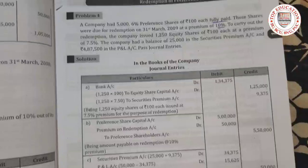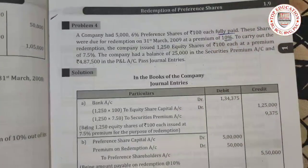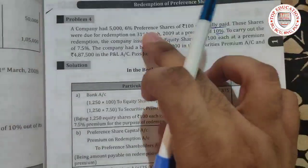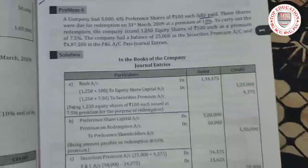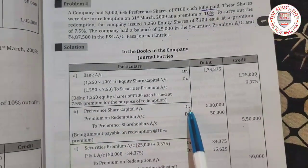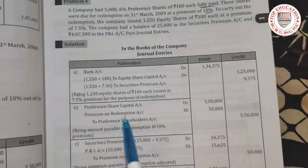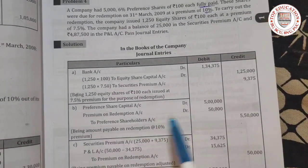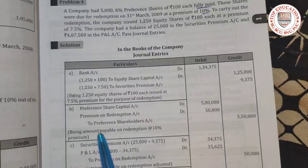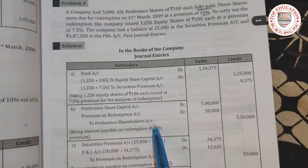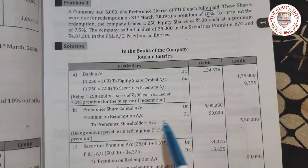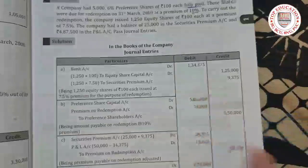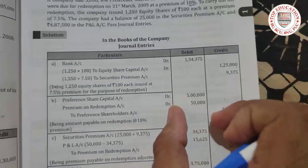Next, for the redemption entry: Preference Share Capital debit, Premium on Redemption debit, to Preference Shareholders Account. The amounts are calculated accordingly and the totals come out correctly.